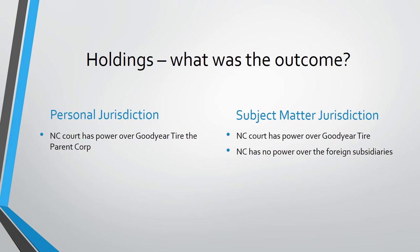The holding of the case was that the Supreme Court, given the two-step analysis, the Hertz v. Friends nerve center standard, and the International Shoe continuous contacts standard, found that the North Carolina court only had power over Goodyear Tire — not the foreign subsidiaries. Note that there's a slide correction to be made on that last bullet point. For our purposes, I wanted to walk you through this analysis, and you should look for a question on this type of analysis or on the Goodyear Tire case on Assessment One. Thank you.